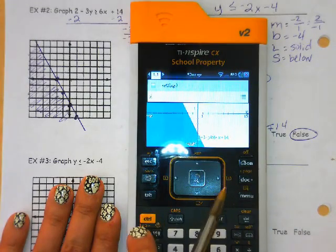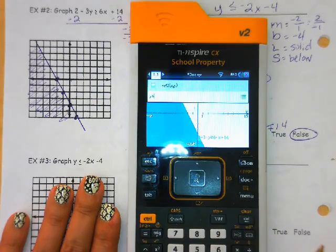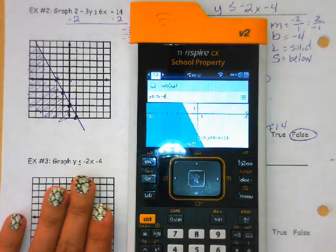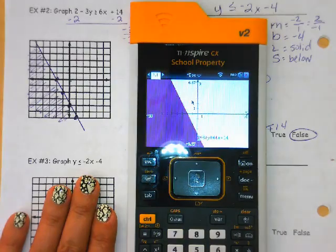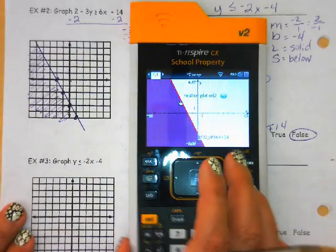We can say y control equals is less than or equal to negative 2x minus 4. Just like when we were doing the types of equations, it should overlap, which it does. So you can see also that you converted it correctly.